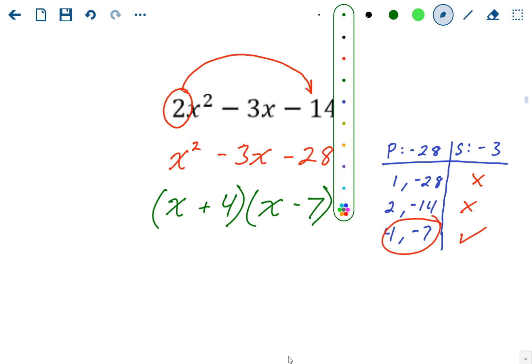So since the first thing we did was move the 2 to the back, we multiplied by 2 in the first step. So now we're going to have to divide by 2. You're dividing each of the factor pairs by 2.